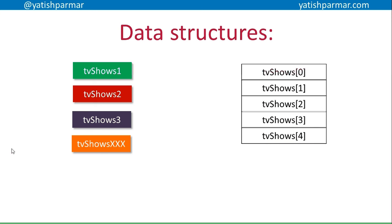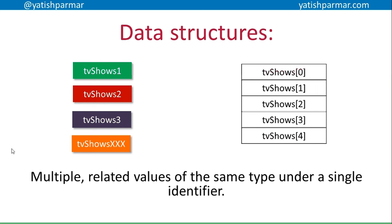Here's an example of an array used to store TV shows. It's called 'tvShows' — a single identifier to refer to the array instead of thousands of different variable names. You access each individual element using the index: tvShows[0] gives the first element, tvShows[4] gives the fifth. A data structure holds multiple related values of the same data type under a single identifier.